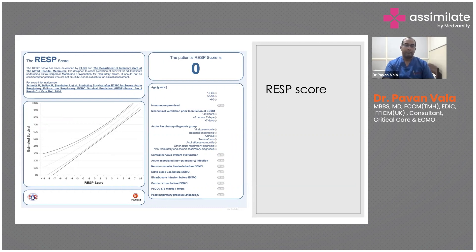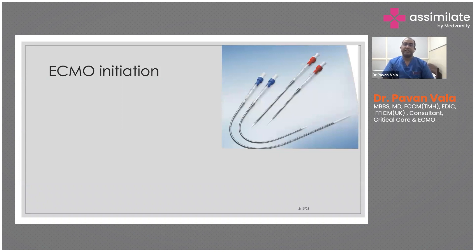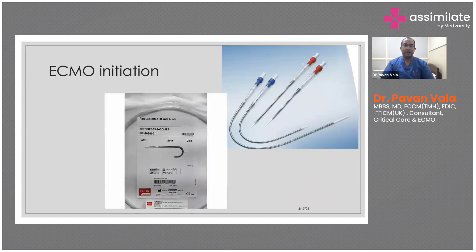When we initiate ECMO we use a Seldinger technique. This involves ultrasound-guided puncture of the femoral vein, then insertion of a long ultra-stiff guidewire of 260 cm, followed by serial dilations — similar to inserting a dialysis catheter but much bigger: 25 or 28 French catheters. You have to look at the vein diameter to determine what size cannula to use.